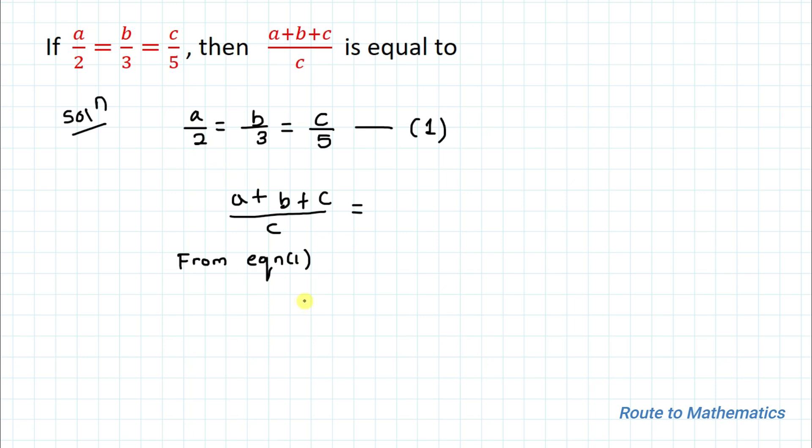From equation 1 we can write that a/2 = c/5. We need to find out the value of a in terms of c.